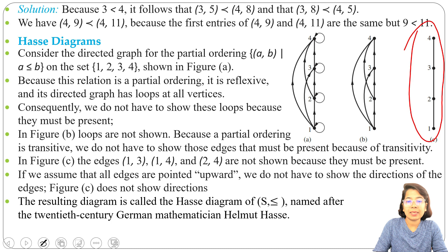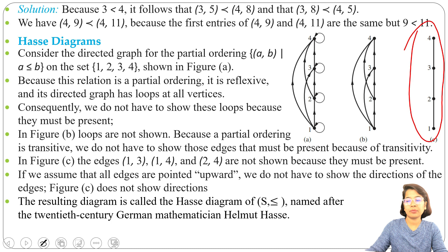This Hasse diagram looks like a chain. It is a special type of partial order called a total order, or linear order, or chain — when every two elements of a set are comparable. Here, every two elements are comparable: 1 < 2, 1 < 4, 2 < 4, 1 < 3. Pick any two elements and they are comparable by the ≤ relation. Hence this is a chain.